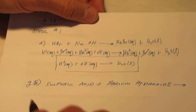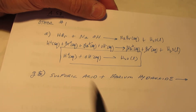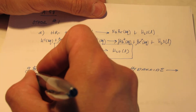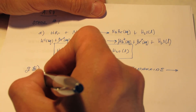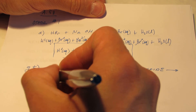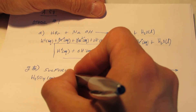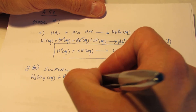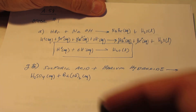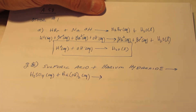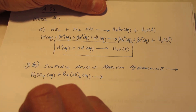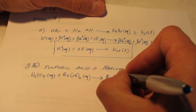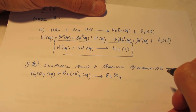Let's do letter G — that's a bit more difficult. Sulfuric acid, H₂SO₄, and barium hydroxide. Barium's two plus, hydroxide is one negative, so that's Ba(OH)₂. Double replacement. Now Ba and SO₄ are going to get together — barium's two plus, sulfate's two negative — so that forms BaSO₄.